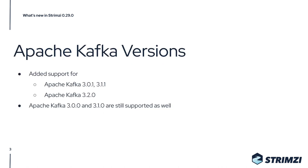One of the main new things is support for new Kafka versions. The Apache Kafka project released Kafka 3.0.1 and 3.1.1 as patch releases, and also released Kafka 3.2.0 as a new minor release. All of these releases are supported in Strimzi 0.29, together with the 3.0.0 and 3.1.0 Kafka versions which were supported already in the previous release. So with Strimzi 0.29 you can choose from all of these Kafka versions.